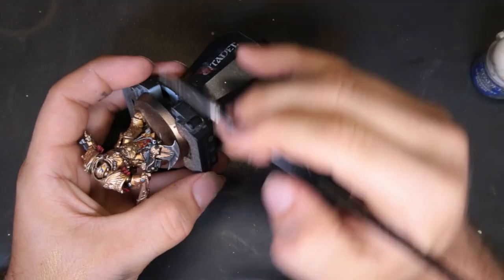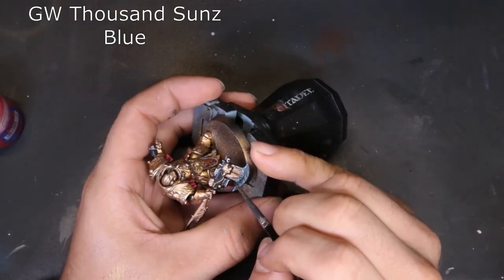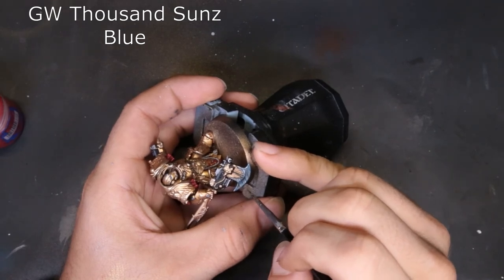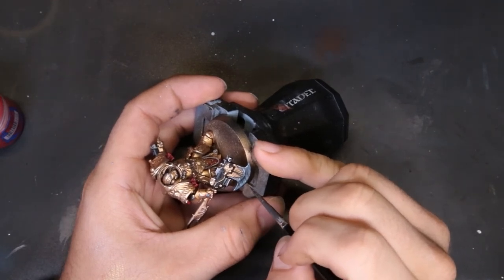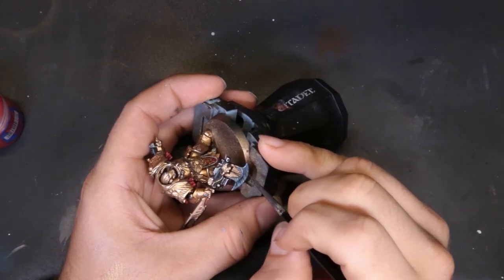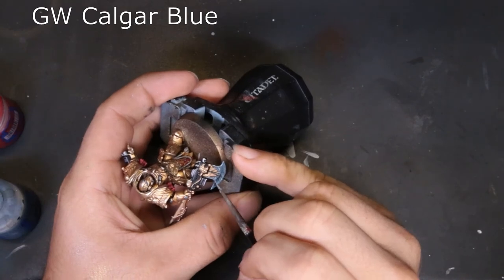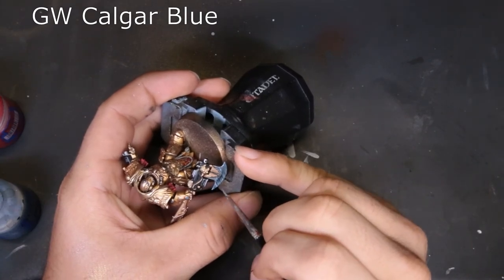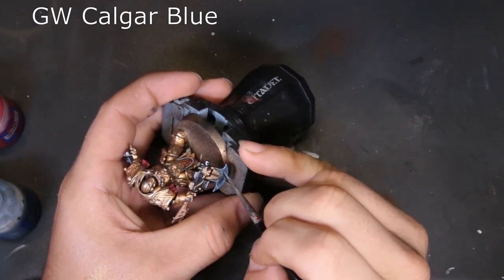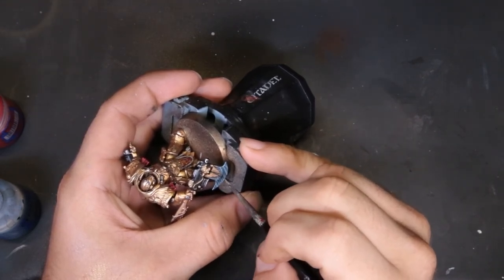So we're going to be able to see the actual metal underneath. Then we go the Runefang Steel, then we go Thousand Sons Blue, and it's just a slashing highlight the whole way down. Next one we're doing with it is Calgar Blue. So again, we're just coming through, we're putting these slashes in there, making sure that it's got a little bit of difference in there, and it's a really neat effect for the limited amount of work.